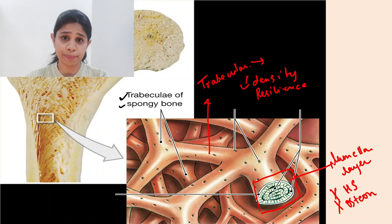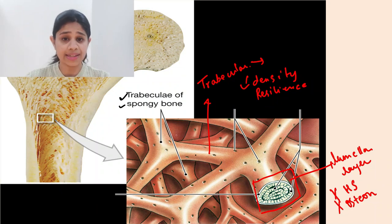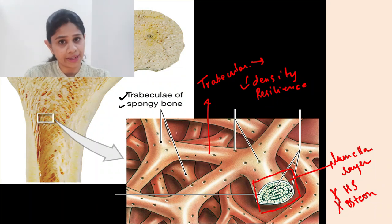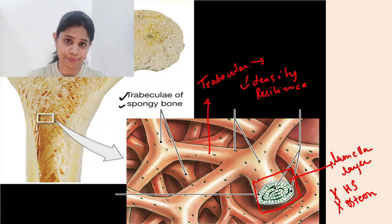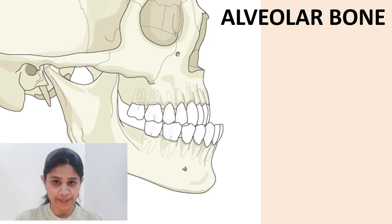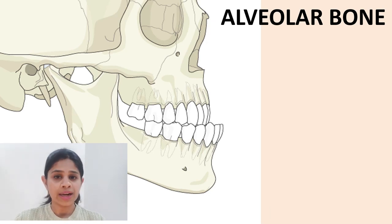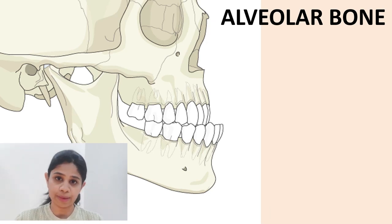The trabeculae are open-ended, and these endings project or attach into the endosteum. Now that we have a brief idea about the structure of bone, let's discuss the alveolar bone in detail.